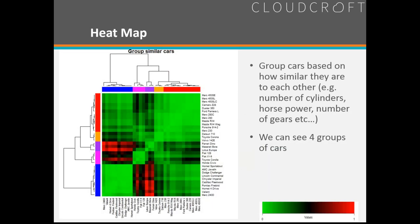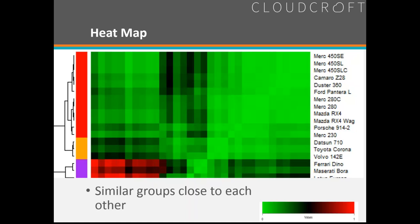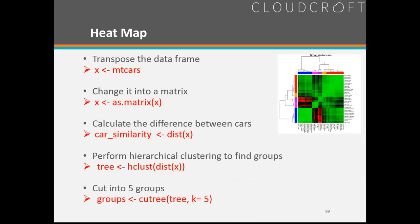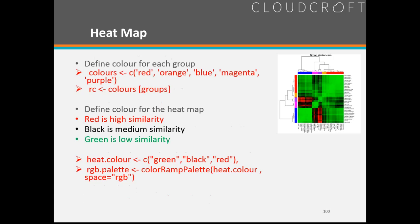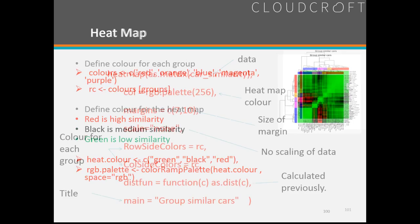Our heat map shows grouping cars by similarity — between different types of cars, with tree structures showing relationships that we can analyze and group. We find that Mercedes 450 SE, SL, and SLC are very similar, and they're nowhere near a Ferrari Dino, for instance. There are some exploratory areas for you to try.